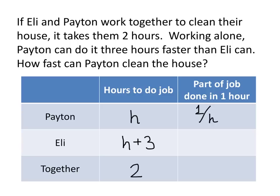We don't know that h is ten, but if it were, that's how it would work out. Similarly, Eli can do one divided by h plus three, that fraction of the job in one hour. Since together they can do the entire job in two hours, that means in one hour they do half of the job.